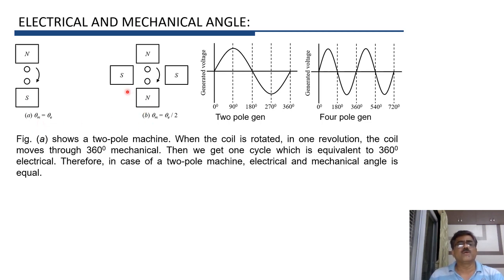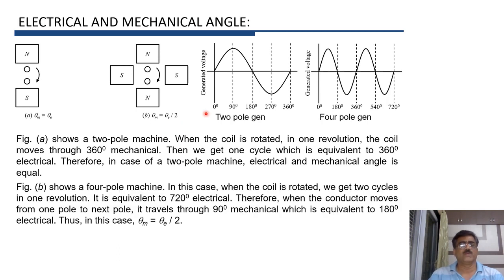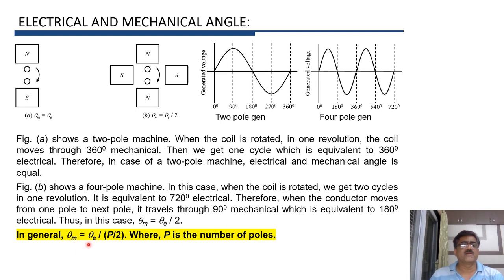In figure B, there is a four-pole machine. If the coil is rotated through 360 degrees mechanical, we get two cycles of generated voltage, equivalent to 720 degrees electrical. So for a four-pole machine, theta mechanical equals theta electrical divided by 2. If number of poles equals 8, theta mechanical equals theta electrical divided by 4. In general, theta mechanical equals theta electrical divided by P/2, where P is the number of poles.